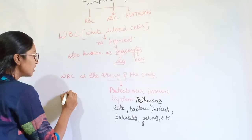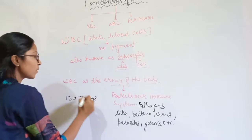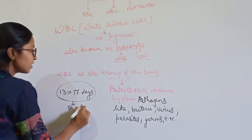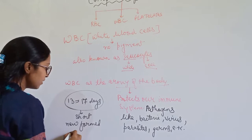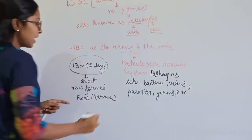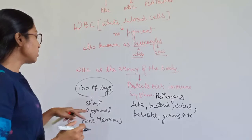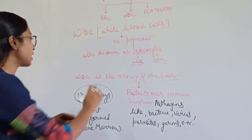The lifespan of WBCs is 13 to 17 days or more. They are short-lived. When WBCs die, new WBCs are formed in the bone marrow, similar to how red blood cells are also formed in the bone marrow.